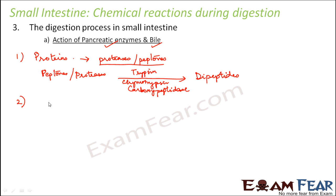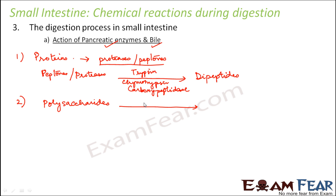Next are the polysaccharides. Some polysaccharides have already been converted into disaccharides in the mouth by the action of salivary amylase, but not all of them — only 30%. So the remaining 70% of polysaccharides will get converted into disaccharides by the action of the enzyme amylase, forming disaccharides.